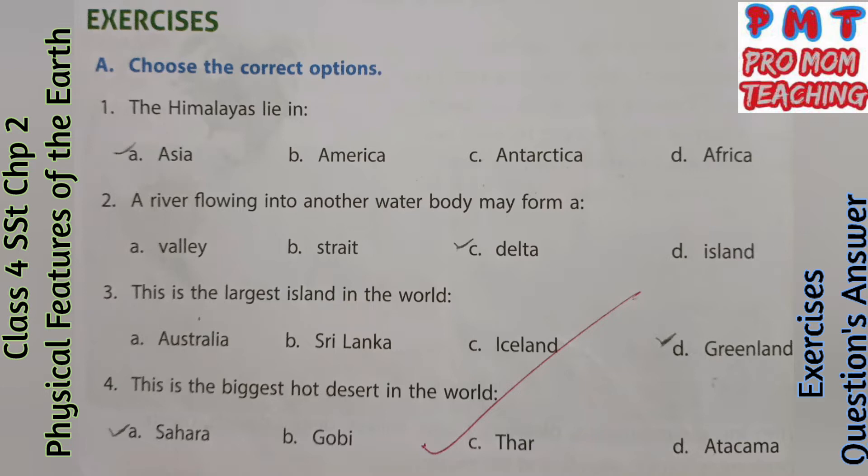Third: This is the largest island in the world — Tick D, Greenland. Fourth: This is the biggest hot desert in the world — Tick A, Sahara.